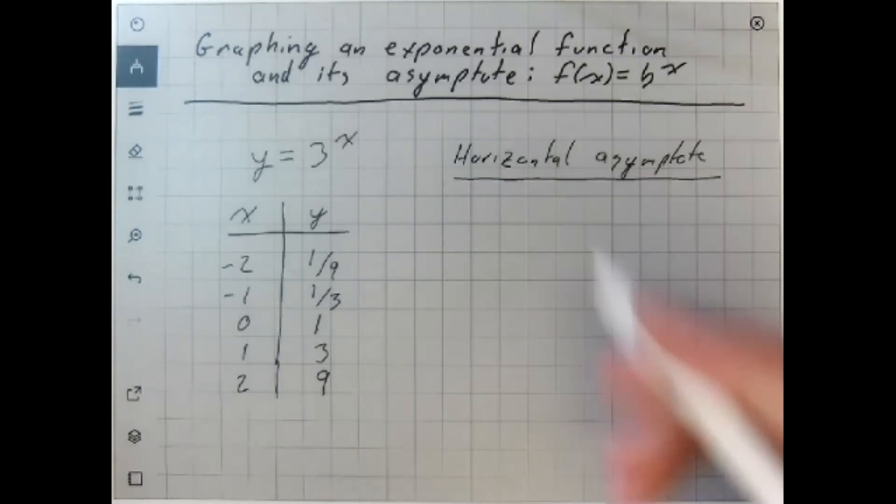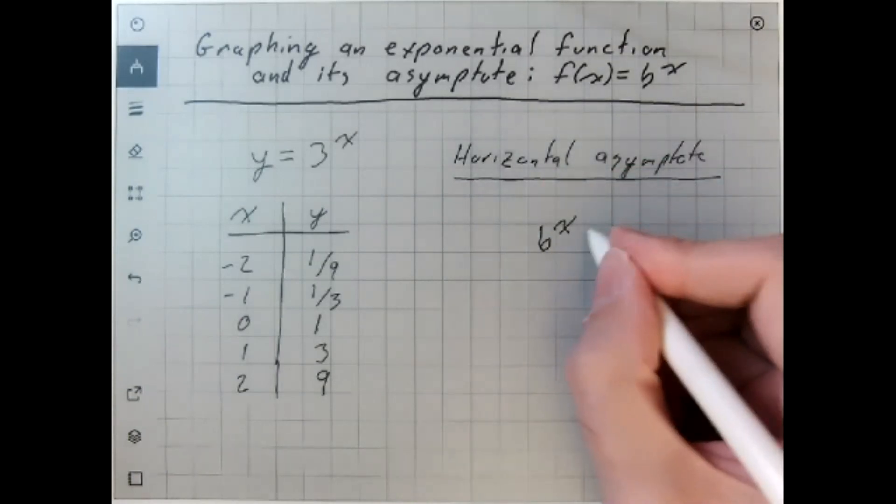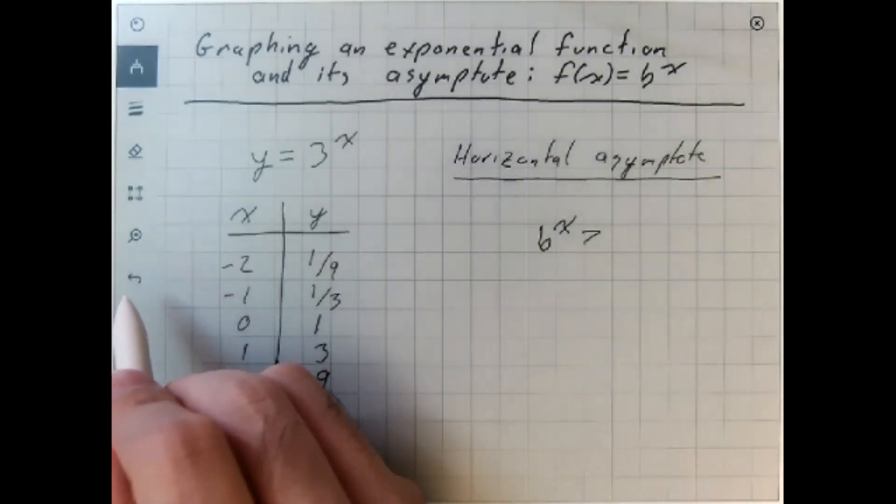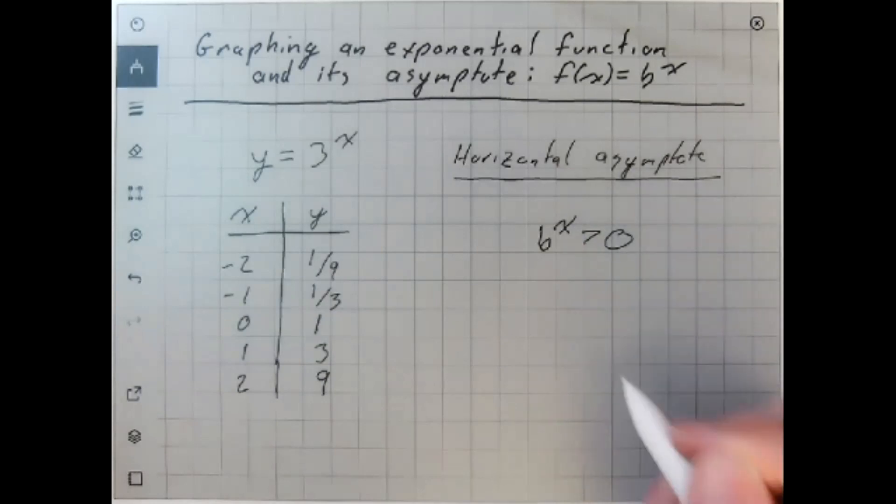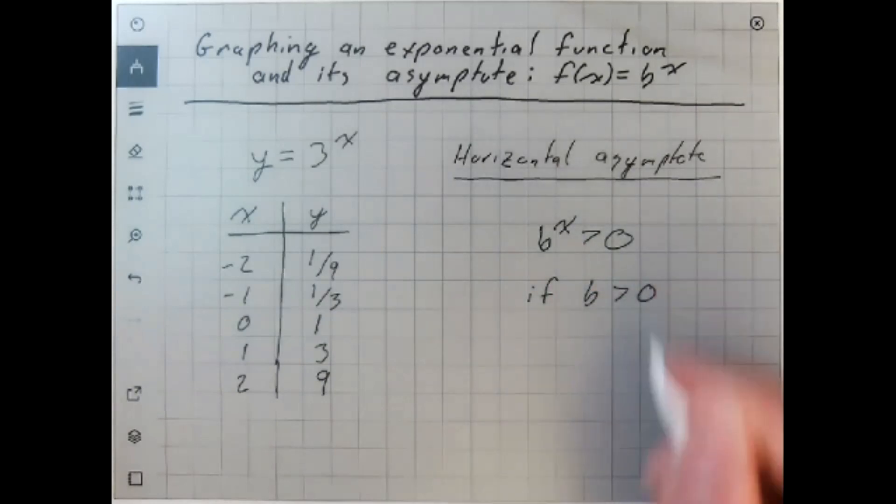In this case, the idea is that b raised to the x power is strictly greater than 0 if b is greater than 0.